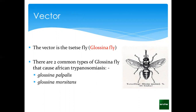The vector for the American trypanosomiasis is the triatomite bug. Specifically, the types of tsetse fly common with African trypanosomiasis are two: Glossina palpalis and Glossina mossitans. These types of tsetse fly are found in two different kinds of geographical locations with different characteristics, and they transmit different kinds of African trypanosomiasis.